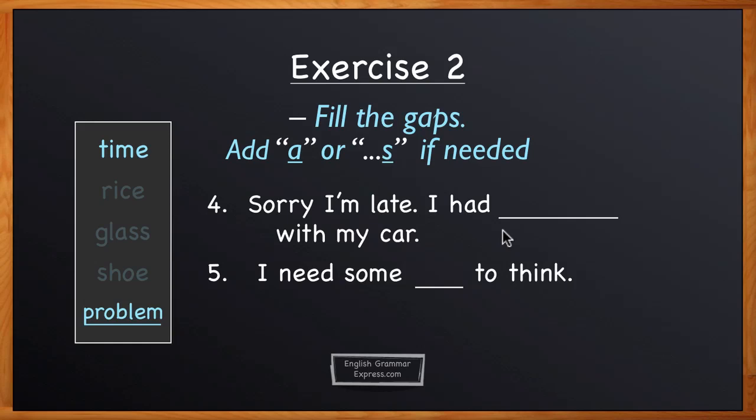If we use it in the singular form, we would say: I had a problem with my car, with the article. If we want to use it in the plural, we would say: I had problems with my car, s being plural.